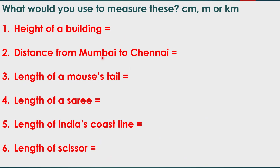Now let us explore what unit you would use to measure these objects. Centimeter is used to measure smaller objects, meter is used to measure medium-size objects, and kilometer is used to measure long distances. The first question: height of a building. Since a building is always tall, it is measured in meter.